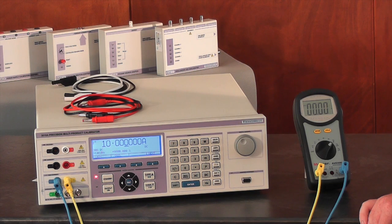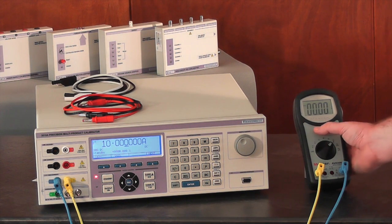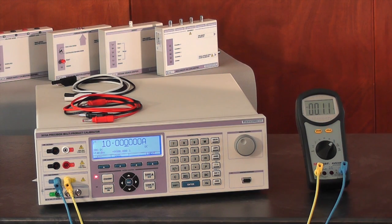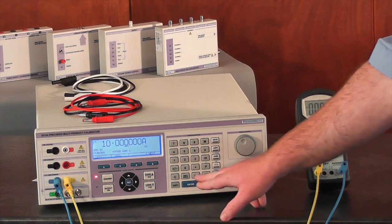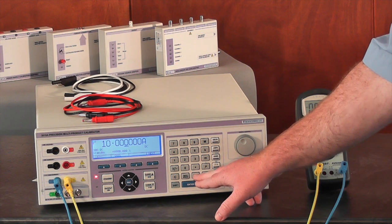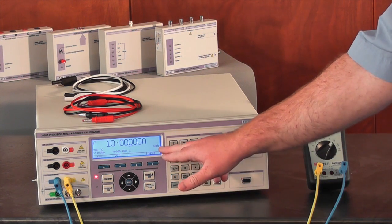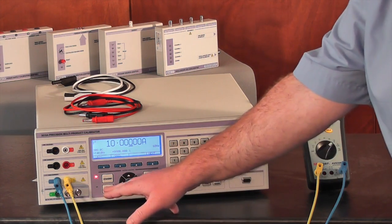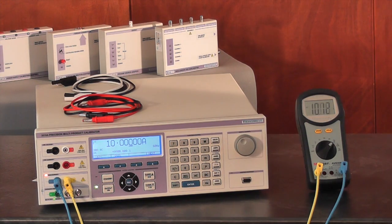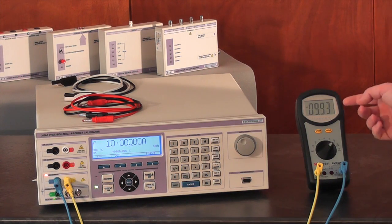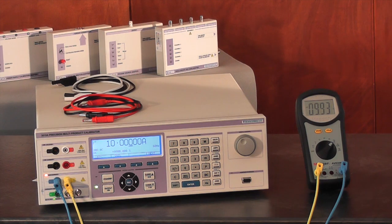Measuring high AC current follows the same procedure as before: switching the multimeter into AC mode, switching the calibrator into AC mode, verifying the frequency, and pressing output on. Once again, we can take a value from the multimeter.